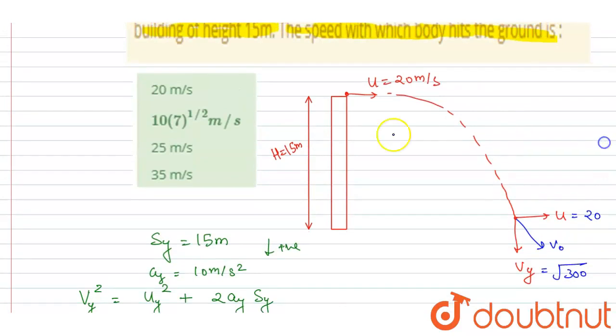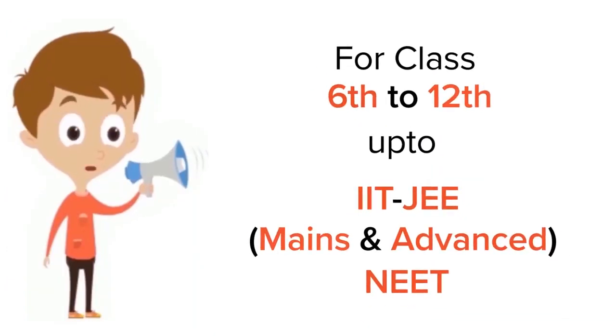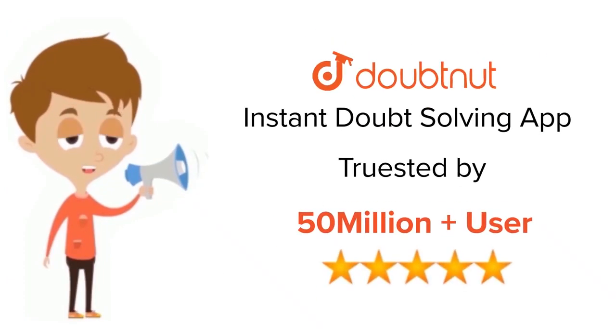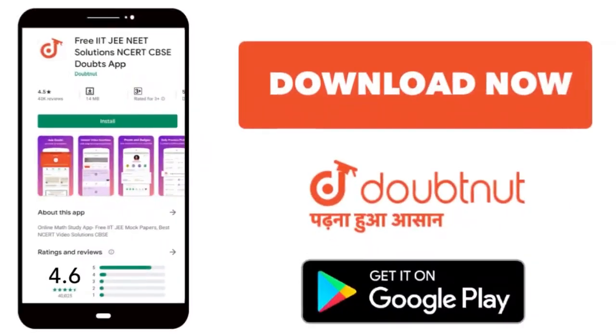So if you see here, B is the correct option. Thank you. For class 6 to 12, IIT-JEE and NEET level, trusted by more than 5 crore students, download Doubtnut app today.